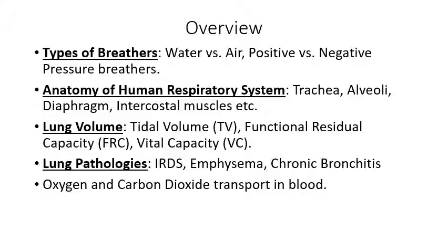We'll talk about the anatomy of the human respiratory system, including the trachea, commonly known as the windpipe; the alveoli, which are the little microscopic air sacs that make up the lungs; and the diaphragm, which is a layer of muscle located at the bottom of the lungs. The diaphragm serves as an anatomical landmark — it's the official borderline between the thorax and the abdomen. The intercostal muscles are responsible for pulling the ribs together, causing the rib cage to be pulled upwards and outwards, expanding the size of the lungs when we inhale.